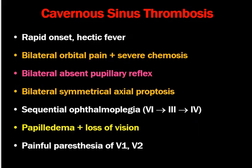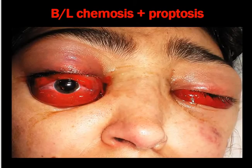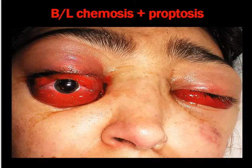Cavernous sinus thrombosis is one of the most dangerous complications of sinusitis. It presents with rapid onset and high fever, bilateral orbital pain, and severe chemosis. Typical features include bilateral absent pupillary reflex, bilateral symmetrical axial proptosis, and sequential ophthalmoplegia starting from the sixth nerve, then third, then fourth nerve. There will be papilledema with loss of vision and bilateral sixth nerve paresis.